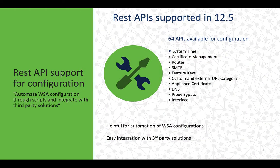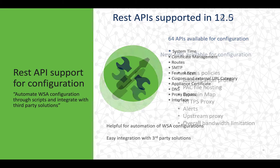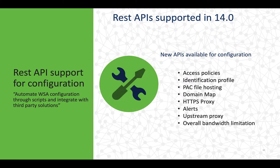Next we have another interesting feature: REST APIs for configuration in WSA. You will be able to configure WSA using REST APIs. The use case here is to automate WSA configuration through scripts and integrate with third-party applications and devices. There were 64 configuration APIs available with the 12.5 release, and with 14.0 we have the next phase of REST APIs available, covering additional new APIs.